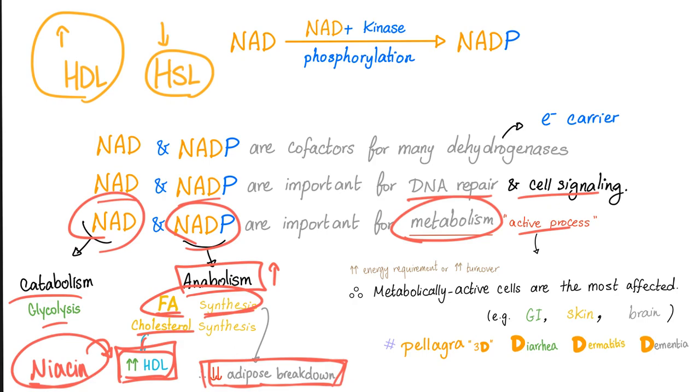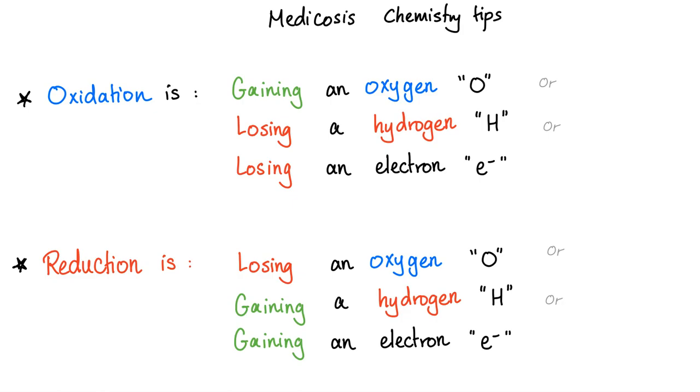They are important for metabolism. A metabolically active tissue is most affected by niacin deficiency. The more metabolically active you are, the more affected you're gonna be. Metabolically active means increased energy requirements such as your brain, or increased cell turnover such as your GI and skin. So GI, skin, and brain will be most affected in niacin deficiency. That's why the symptoms of pellagra are diarrhea, dermatitis, and dementia. Medicine makes so much sense once you understand what you're talking about.